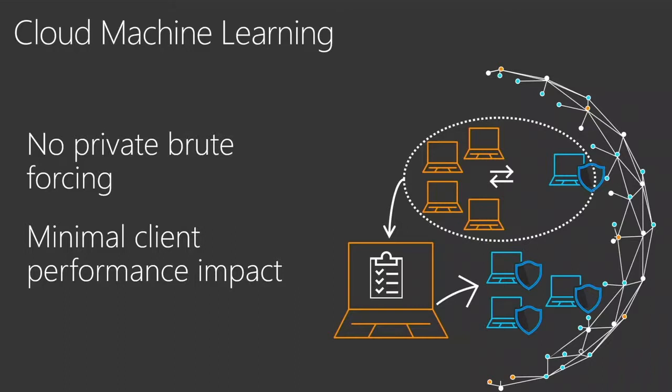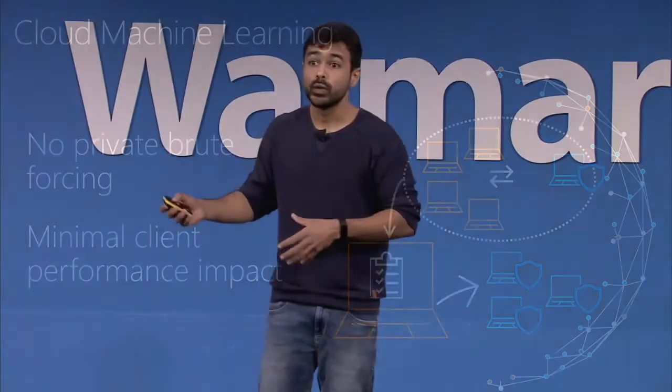If you see that certain machines are adversarial and testing your system, one approach is to give them false verdicts — make them believe they're evading your systems, but once this goes to real customers, start blocking. You can develop other controls to prevent brute force attacks. The other benefit of cloud machine learning is minimal client impact. You can have heavy-duty ML models on the cloud because you have a lot of compute there, which means the client can be super lightweight with no interruptions to the end user.